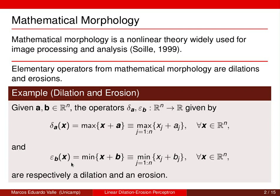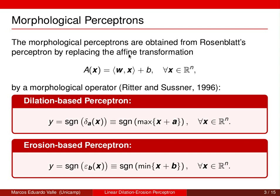Let us now review the morphological perceptrons introduced by Ritter and Sussner in 1996. The morphological perceptrons are obtained from the classic perceptron by replacing the affine transformation Ax — the dot product of w and x plus b — by a morphological operator. For example, the dilation perceptron is given by y equals the sign of the dilation of x, and an erosion-based perceptron is given by y equals the sign of the minimum of x plus b.